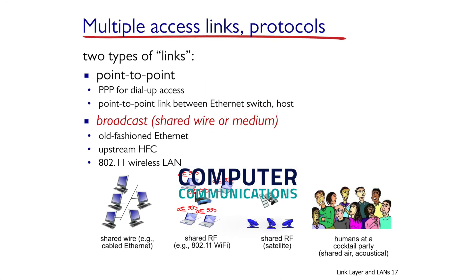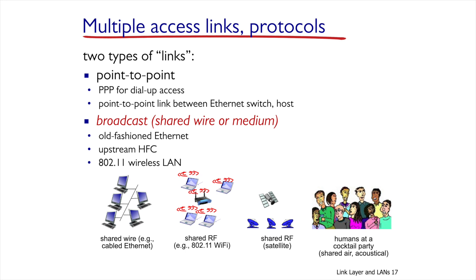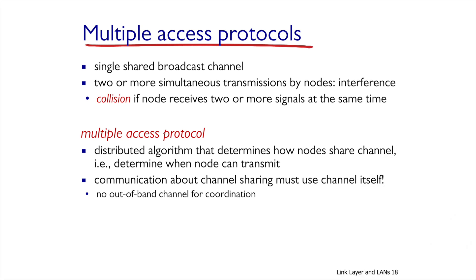There are two types of links. Point-to-point links, which only connect two nodes. We will see an example of a point-to-point link when the host is connected to the Ethernet switch. The other type of links is a broadcast link. We can understand what broadcast links are from the following example: assume there are several people in a room trying to talk to each other. The air inside the room is precisely the broadcast link. We will first discuss broadcast links.